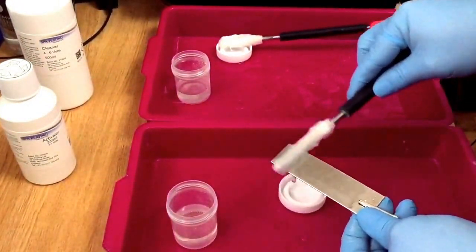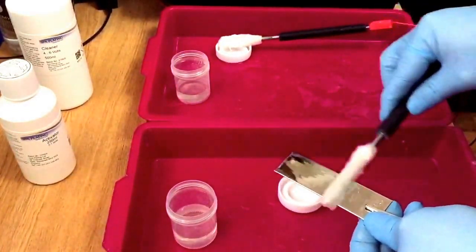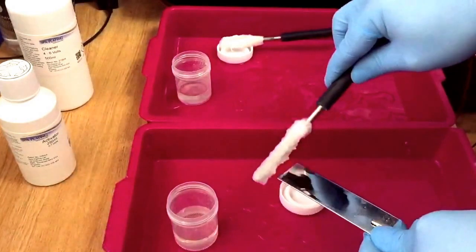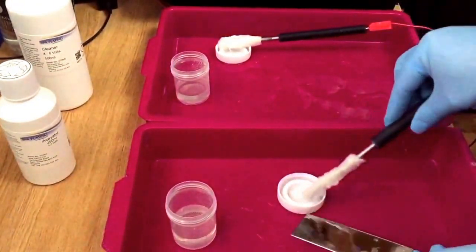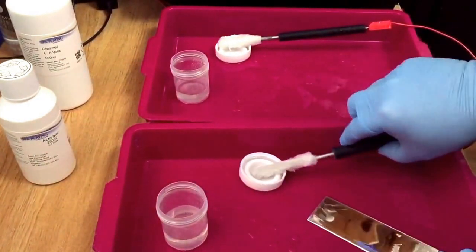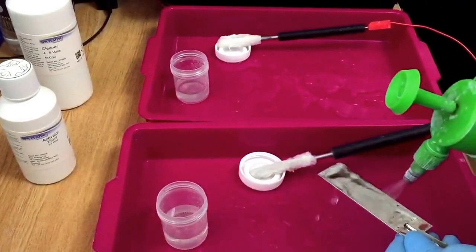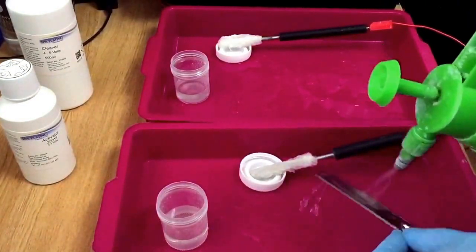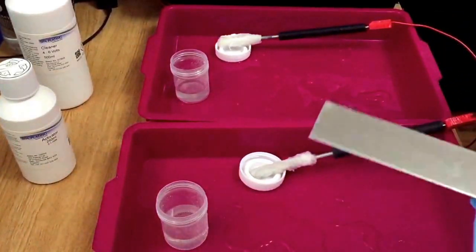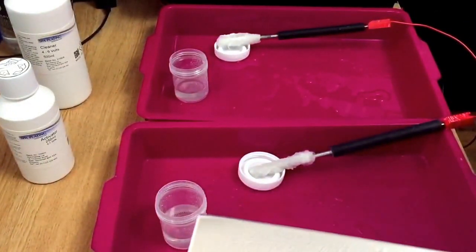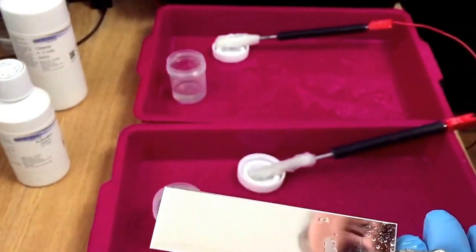Now the next stage with a different swab of course. Make sure it's soaked in very well. This is the activation. You can get this cleaner and activator on my eBay or on my website, or directly from SPA Plating UK. You can see now, no water breaks.